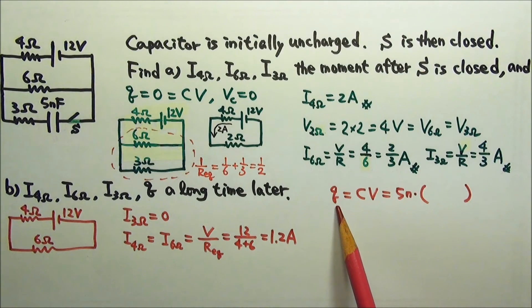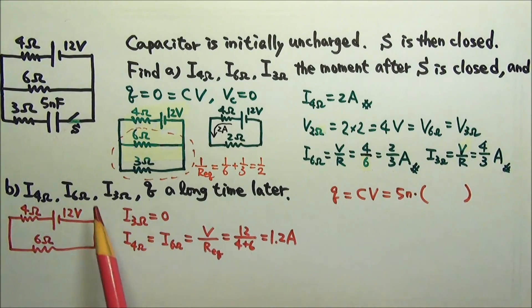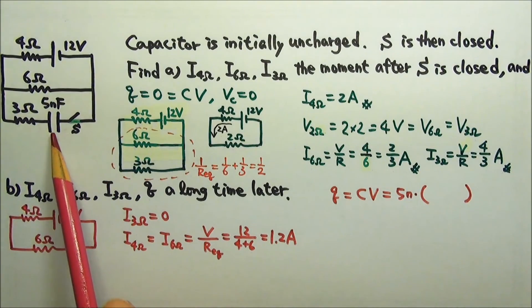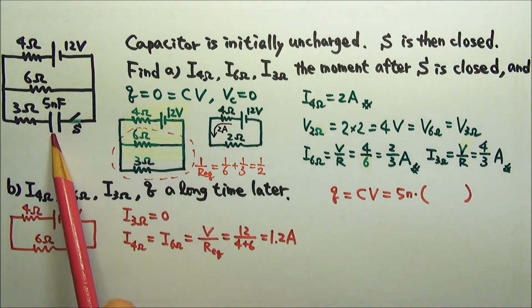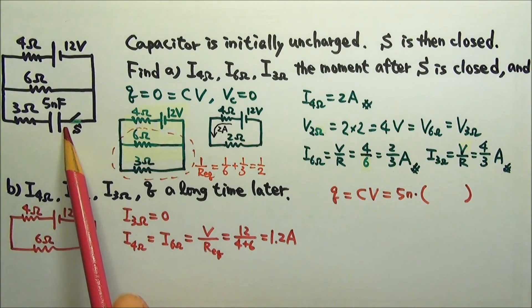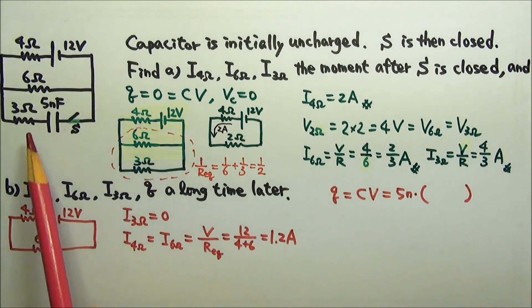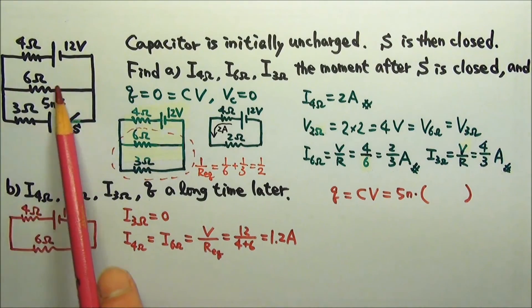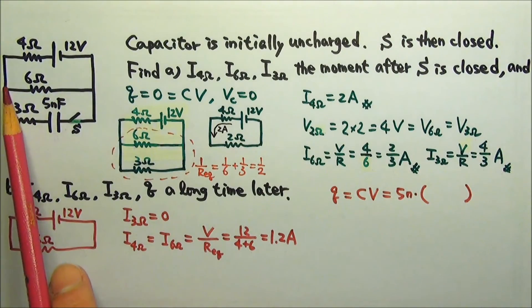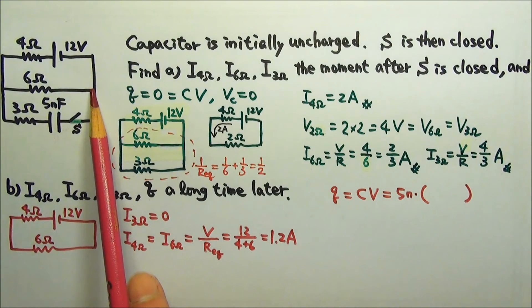To find the charge on the capacitor, we use Q equals CV. So we need the voltage across the capacitor. For this, we look at what the capacitor is in parallel with. In this case, the capacitor itself is not in parallel with anything, but this segment is in parallel with the 6 ohms. So we need to find the voltage across the 6 ohms.